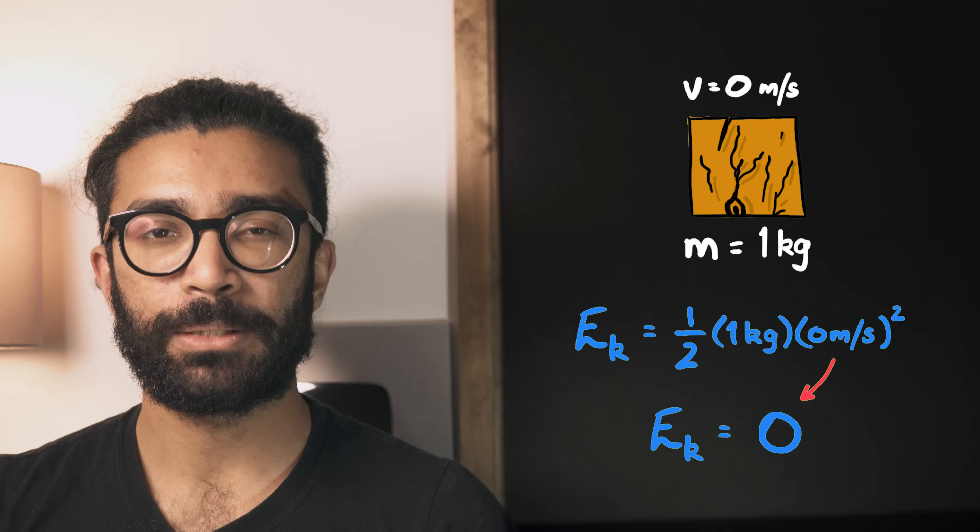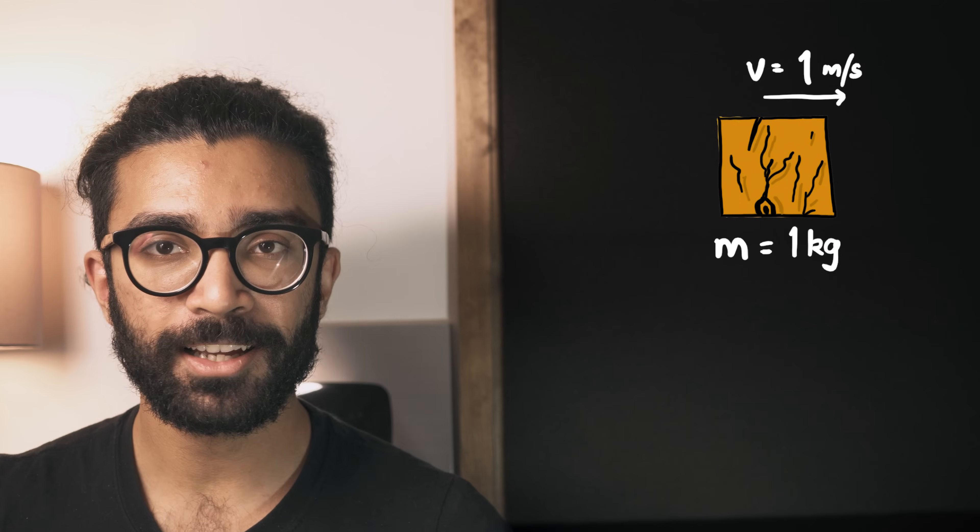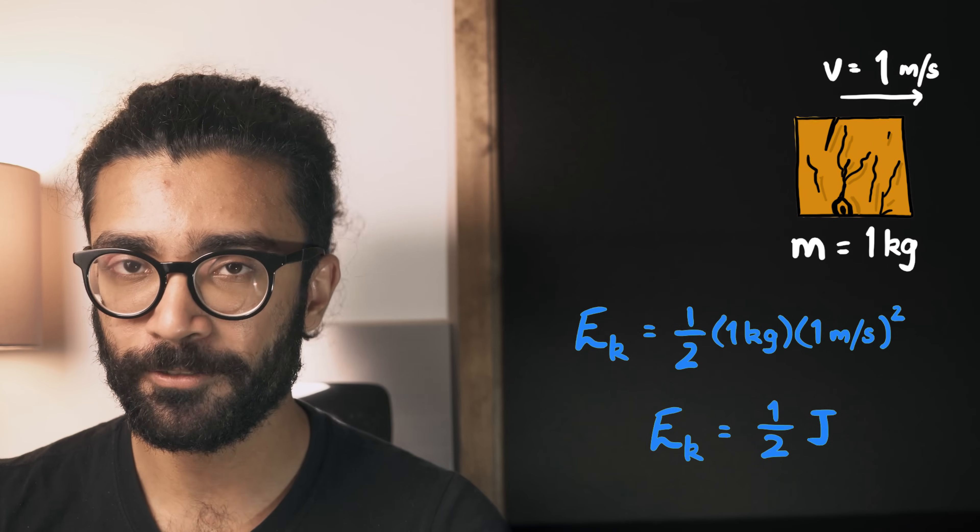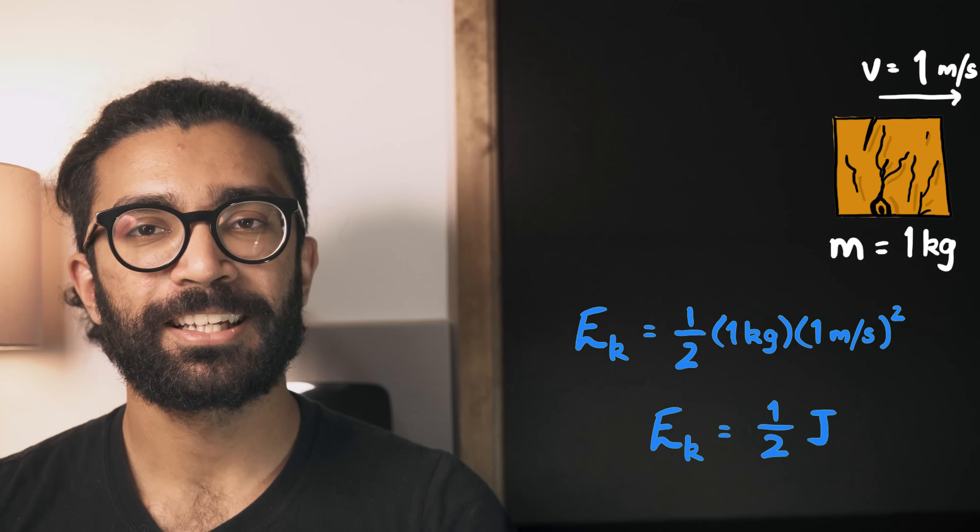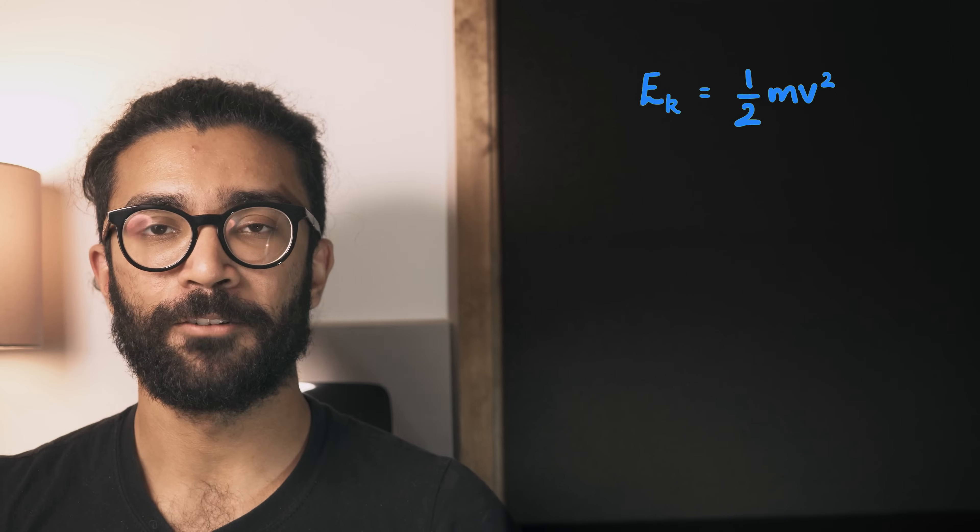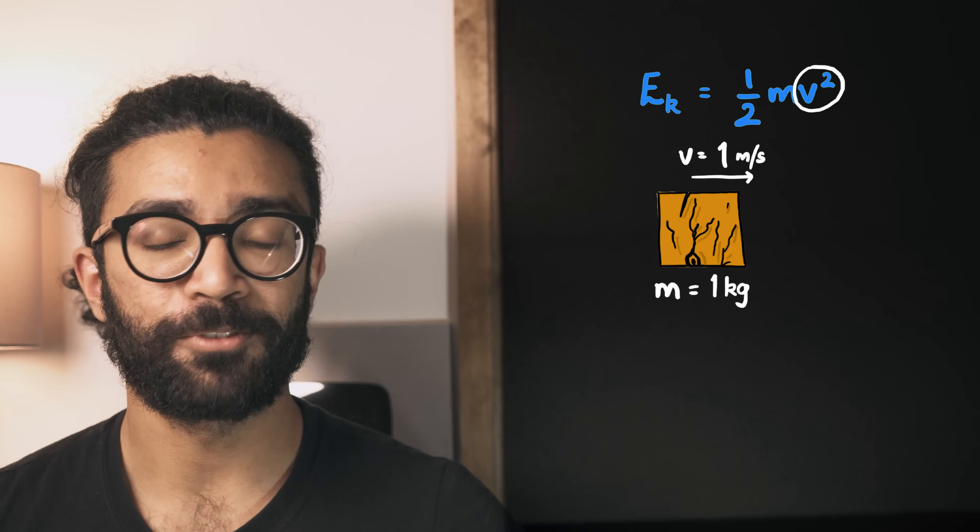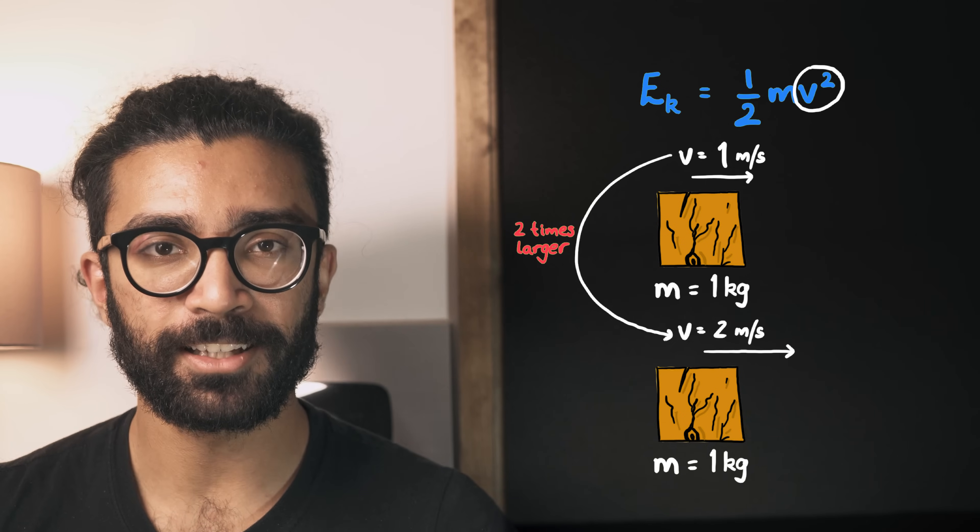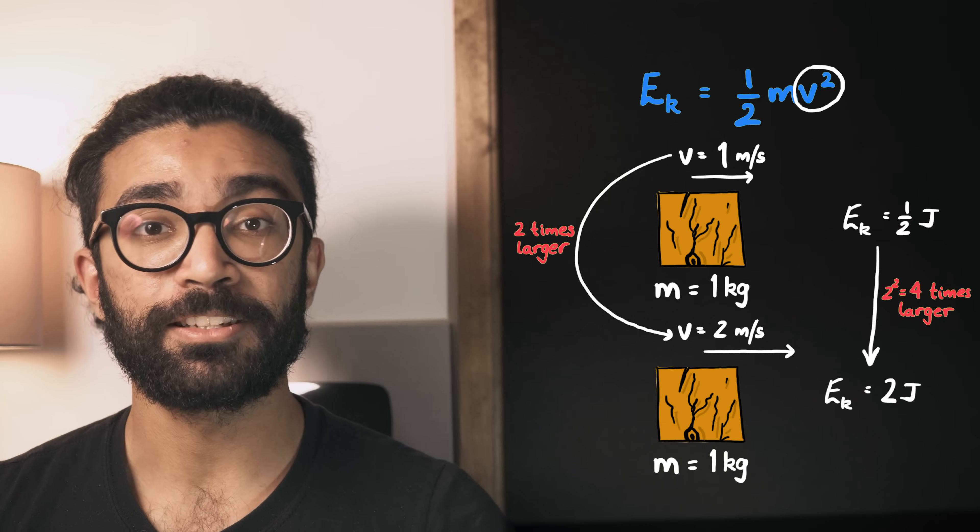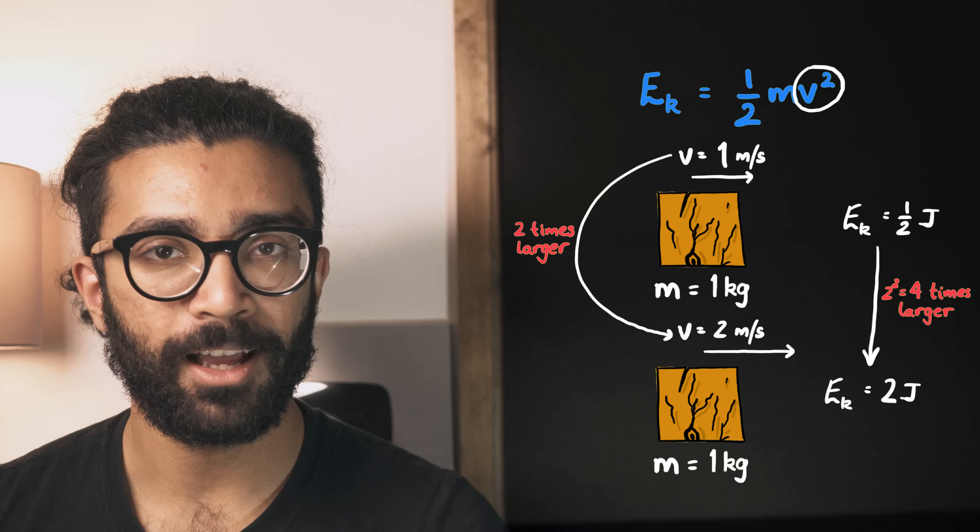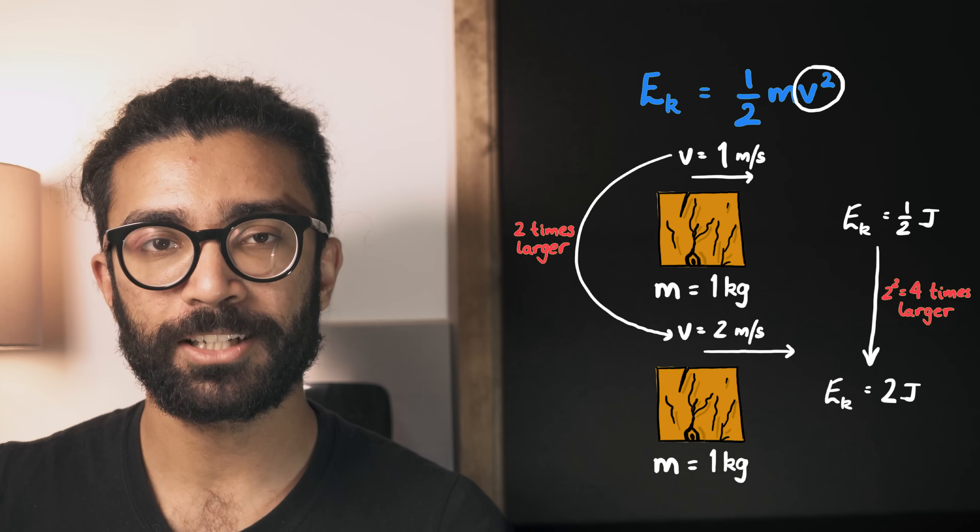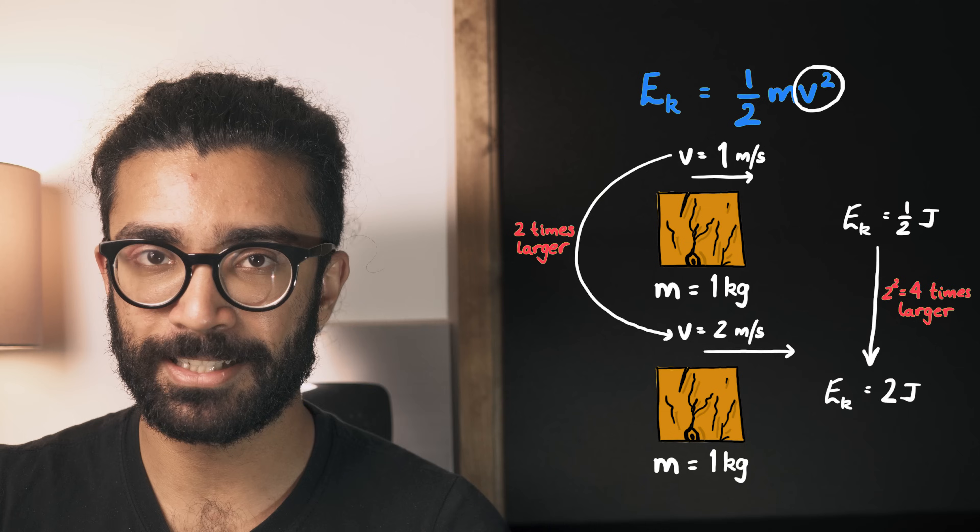Now let's say that it moves at a speed of one meter per second. At this point the kinetic energy of the block is one half joules. Now because the kinetic energy equation has a factor of speed squared, we see something rather interesting. If we double the speed of the block to two meters per second, the kinetic energy increases by two squared times. It becomes four times larger. So changing the speed of an object has a big impact on its kinetic energy.